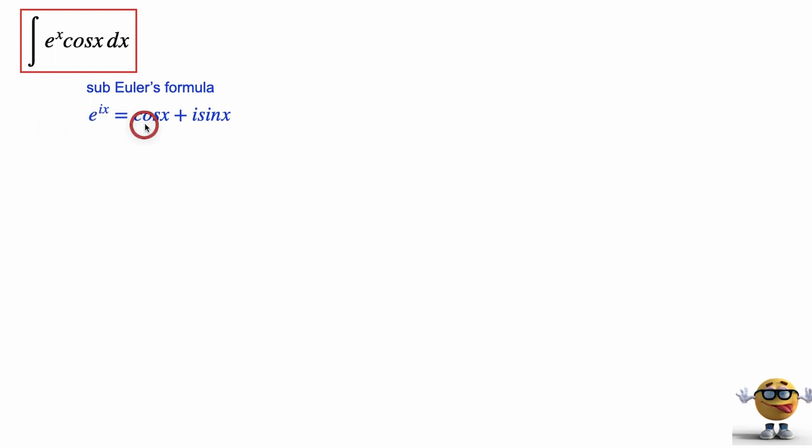Cos x is the real part of e to the i x. So e to the i x is all of this. This is the imaginary part. This is the real part. So if we substitute that in, we're going to solve for the real part of the integral of e to the x, e to the i x dx.